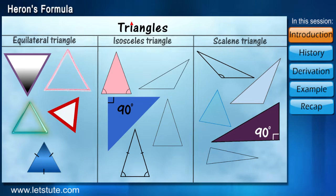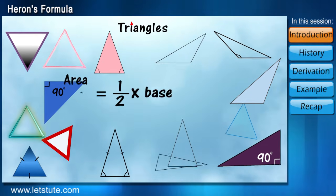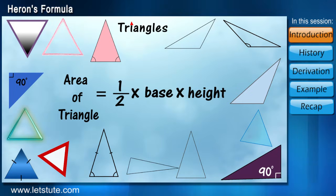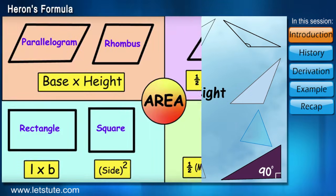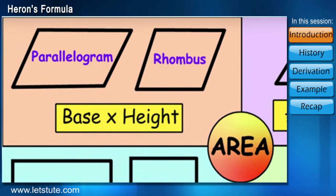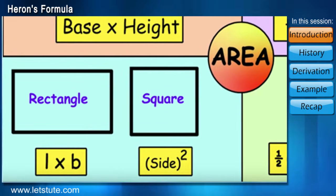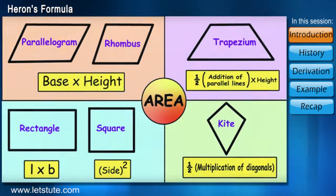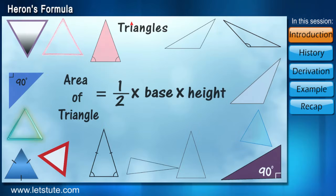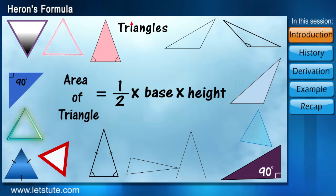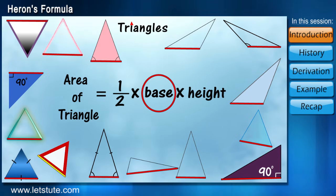For all these types of triangles, we have only one formula to calculate its area. Whereas, we have learned that all different types of quadrilaterals have different formulas for their areas. Isn't this a little unfair for triangles? Till now, we have been studying that the area of triangles is calculated using the formula half multiplied by base multiplied by height.